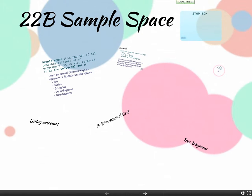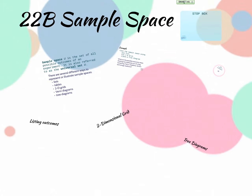So, 22B is on sample space. We did talk a little bit about sample space with the investigation and with the notes yesterday, but we're going to talk more about a few different strategies for being able to find your sample space.